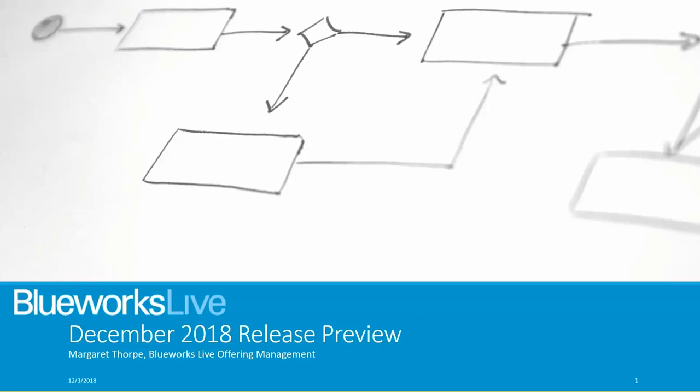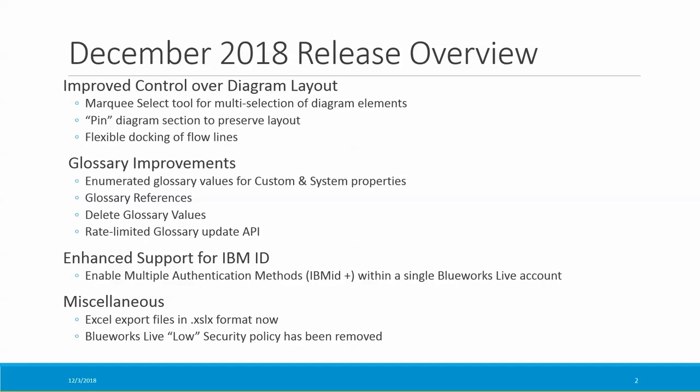This release of BlueWorks Live provides increased control over the layout of process diagrams, enhances the BlueWorks Live glossary, and introduces flexibility into the configuration of user authentication for a BlueWorks Live account. You've got much more control over the layout of process diagrams now with a new marquee select tool for multi-selection of process diagram elements, the new pin feature that allows the layout of process diagrams to be preserved, and the ability to reposition entry and exit points of flow lines on activities, gateways, and events in process diagrams.